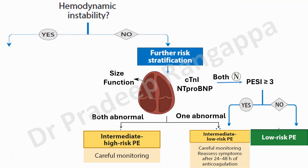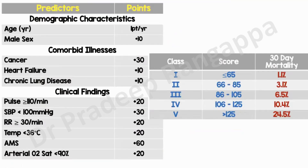PESI stands for Pulmonary Embolism Severity Index and provides prognostication. The highest scoring variable is altered mental status at 60 points. Cancer, heart failure, chronic lung disease, and hemodynamic instability each score 30. A PESI above 125 is associated with mortality around 34.5%. It's available on MDCalc — just remember hemodynamic instability, cancer, and altered mental status carry the highest scores.